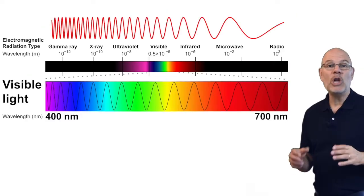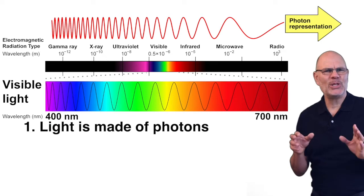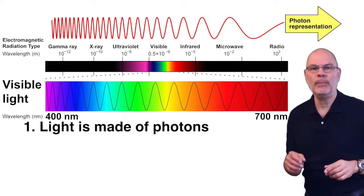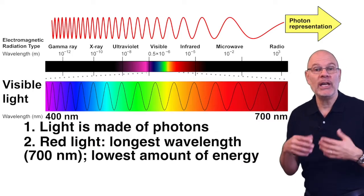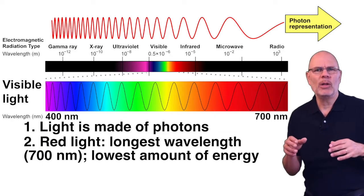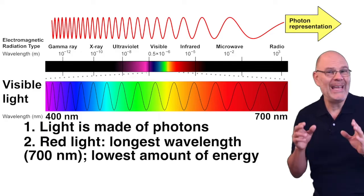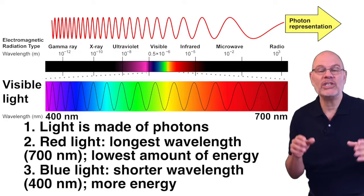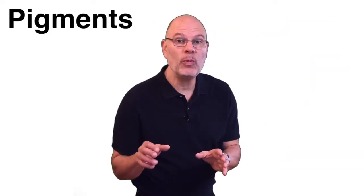So what do you need to know about light? Just this: visible light is made of massless particles called photons that vary by wavelength and energy. Red light has the longest wavelength and the lowest amount of energy of any type of visible light. The wavelength of red light is 700 nanometers, which is a billionth of a meter. The wavelength of blue light is shorter and its energy is higher.